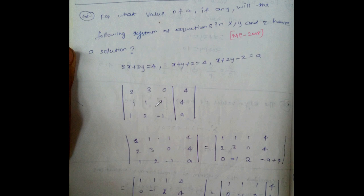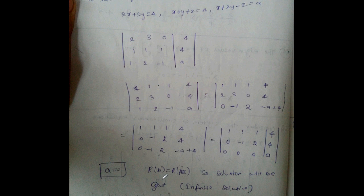Check the 3x3 coefficient matrix determinant — equal to 0 or not equal to 0. Then check the augmented 3x3 matrix. Result: a equal to 0, and rank A equals rank B, so the solution gives an infinite number of solutions.